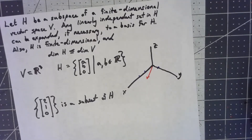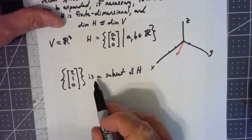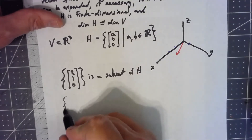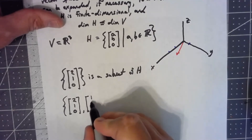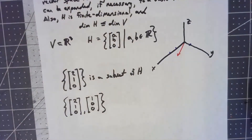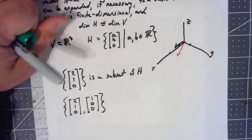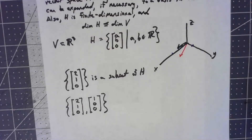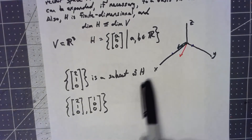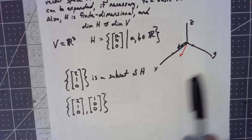To get off that line, I need another vector. I can take a vector that's in the XY plane but isn't a multiple of (2, 1, 0). So let's keep it simple and add (1, 0, 0). By adding a vector like that, I can expand and get anywhere in the XY plane. This set is still linearly independent — I've added to what I had and created a basis for the XY plane.